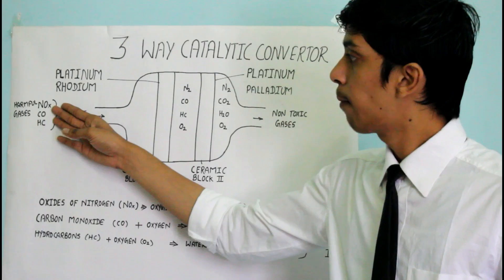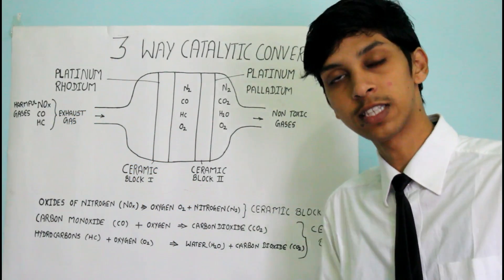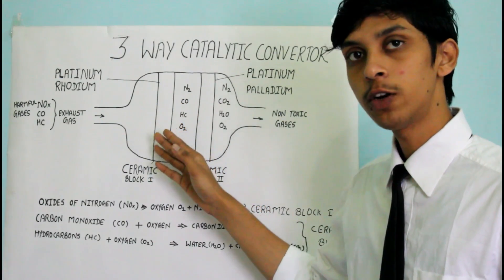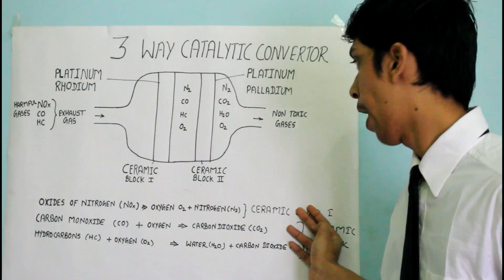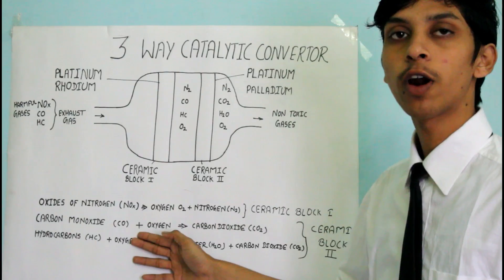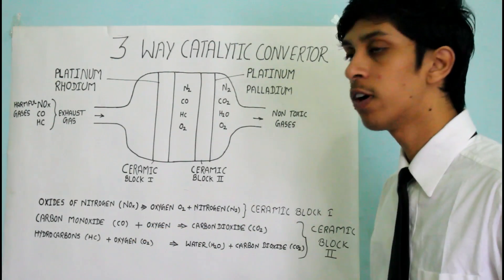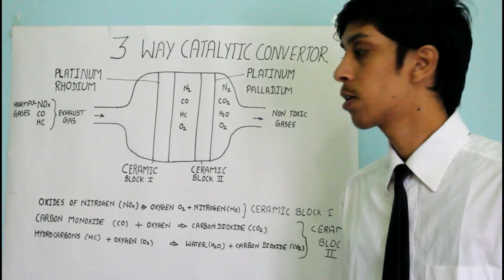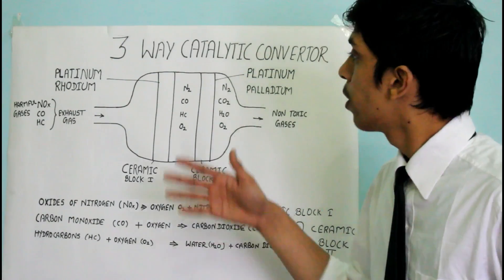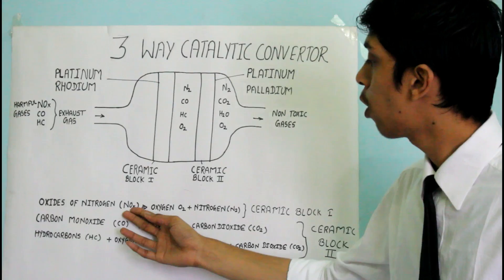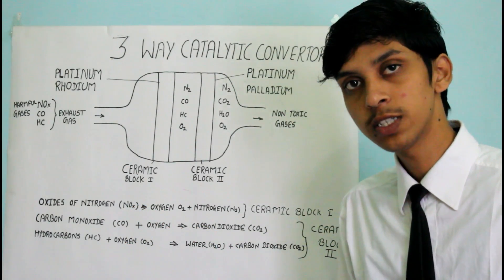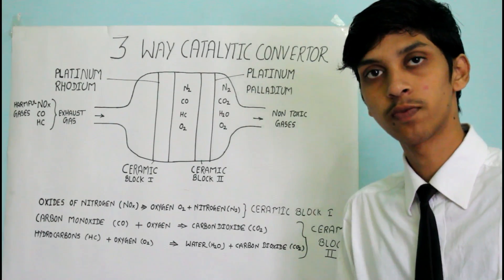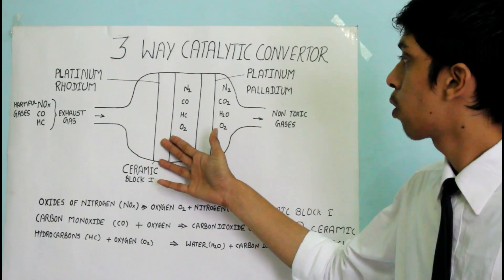Through these blocks, the harmful gases — NOx, carbon monoxide, and hydrocarbons — are converted into less harmful gases. In ceramic block one, NOx (oxides of nitrogen) is broken down. When the exhaust gases are introduced into ceramic block one, the NOx is broken into oxygen and nitrogen atoms, forming less harmful gases.